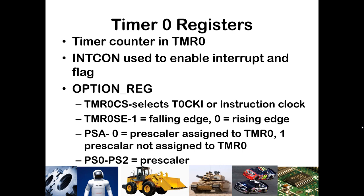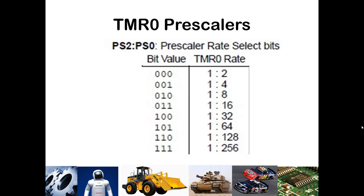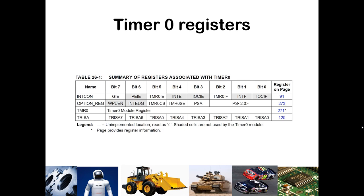The PSA bit determines whether or not you are using a prescaler. If you do not assign a prescaler by putting a 1 in PSA, then you count every clock event or every rising or falling edge of T0CKI. If you put a 0 in PSA, a prescaler is assigned, determined by 3 bits PS0 through PS2. The table on screen shows what 3-bit values determine the prescaler: 000 counts every 2 cycles, and 111 waits until 256 cycles have come in before incrementing the counter.